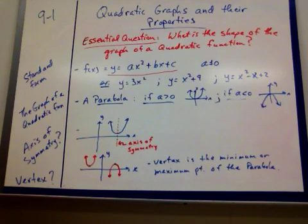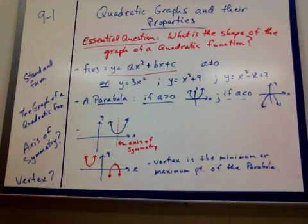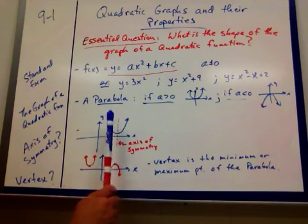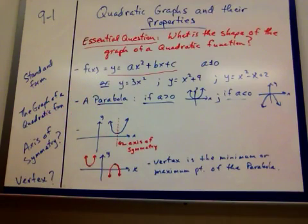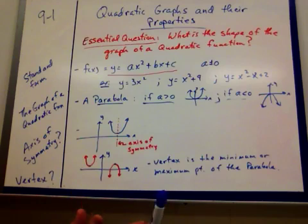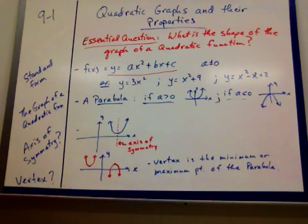A couple of terms we use here: axis of symmetry is one thing we always talk about with the quadratic. The axis of symmetry is this line that goes right down the middle of the parabola and cuts it in half, so that you could fold the parabola upon itself and it would be equal. It's like taking a sandwich or a hot dog bun and folding it — that's the axis of symmetry, that line that goes right down the middle.